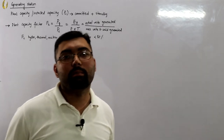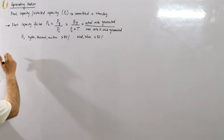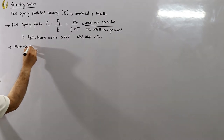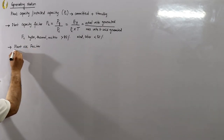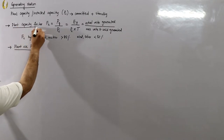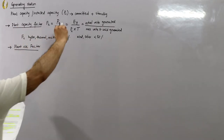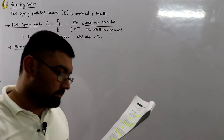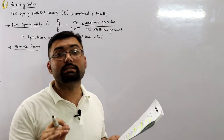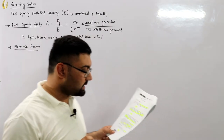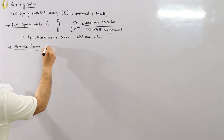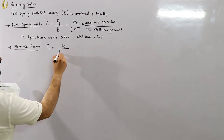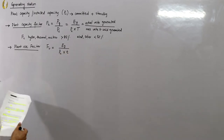The other factor we have is the plant use factor, which measures how much the plant is being used. The plant use factor is denoted by FU. In the plant use factor, we consider only the time for which the plant is in operation, not the overall time period.